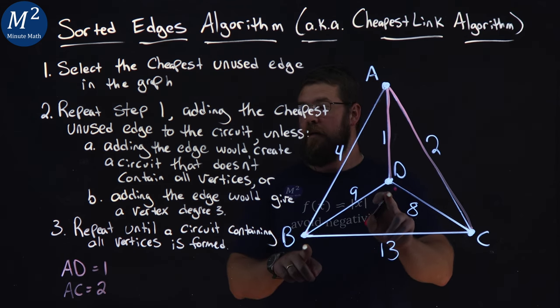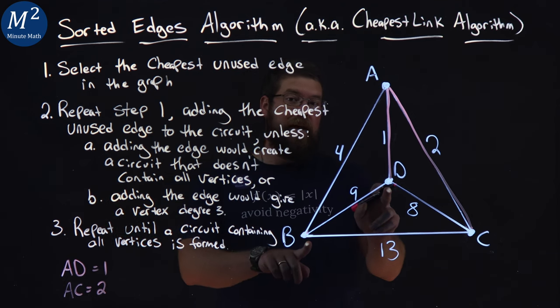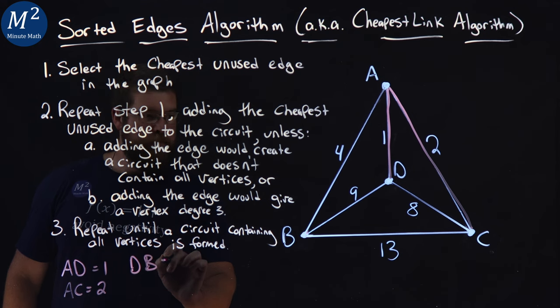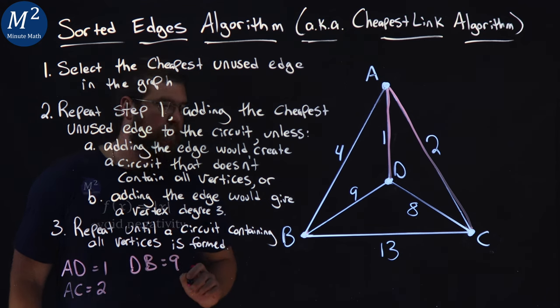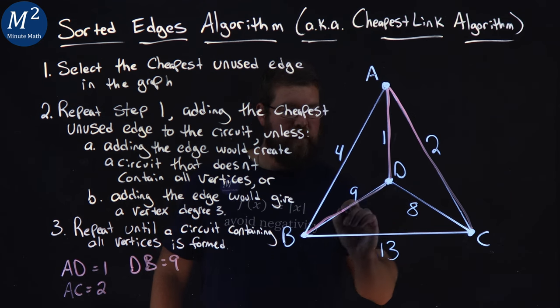It would be nine. DB. And that doesn't create a circuit, and it doesn't create anything with degree three. So DB would be next, and that is the weight of nine. So we can highlight that here.